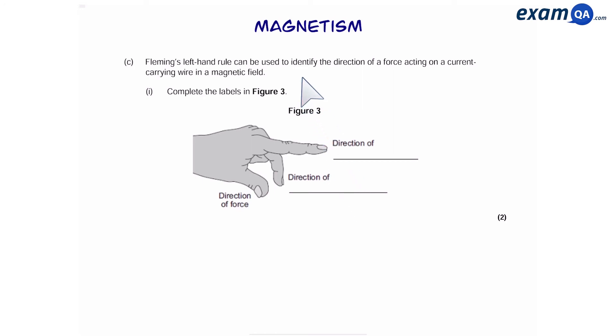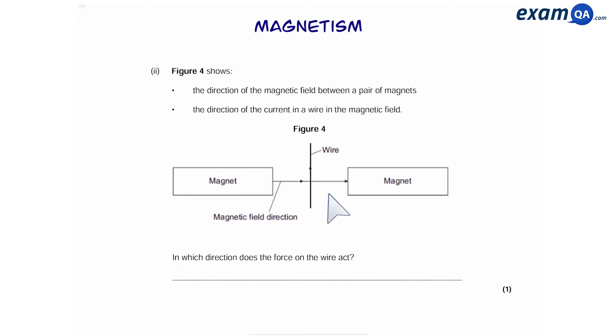Part C. Fleming's left hand rule can be used to identify the direction of a force carrying on a current. Complete the labels in figure 3. So figure 3 is a left hand. The first finger points in the direction of the magnetic field. That's one mark. And the second finger points in the direction of the current. That's another mark. We can see the thumb is always pointing in the direction of the force.